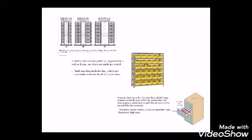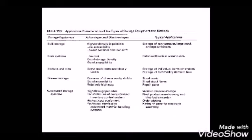Further storage options include shelves — sometimes called bins — and drawer-type storage. This table shows the application characteristics of various storage equipment and methods, covering bulk storage, rack system, shelves, drawer, and automated storage system, with advantages, disadvantages, and typical applications.